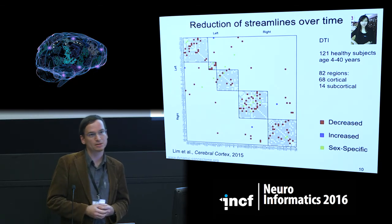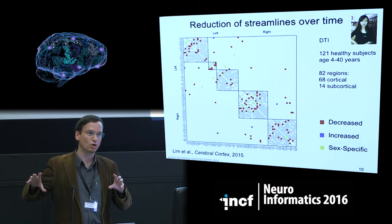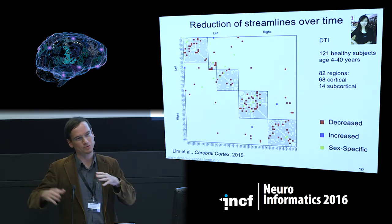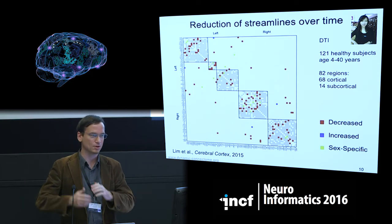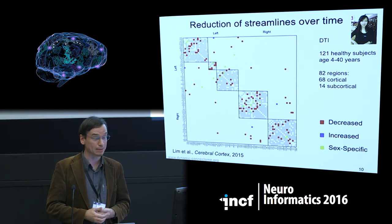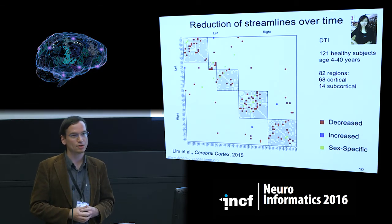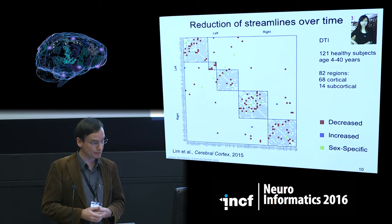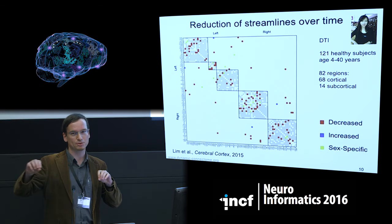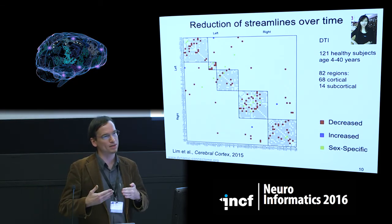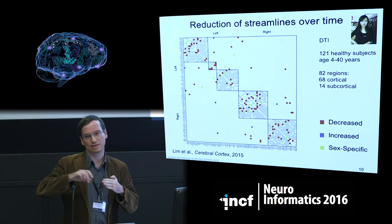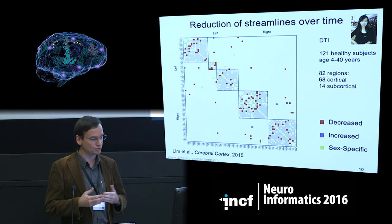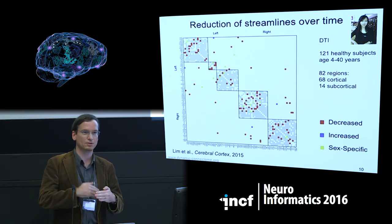Fiber tracts shown in dark or light gray are not changing — they stay stable over time, normalized by total brain volume and total number of fiber tracts. Red indicates a relative decrease in streamlines; blue indicates an increase, which may reflect myelination increasing over time rather than new axon formation. Yellow indicates gender-specific fiber tracts — decreasing in females and increasing in males or vice versa.